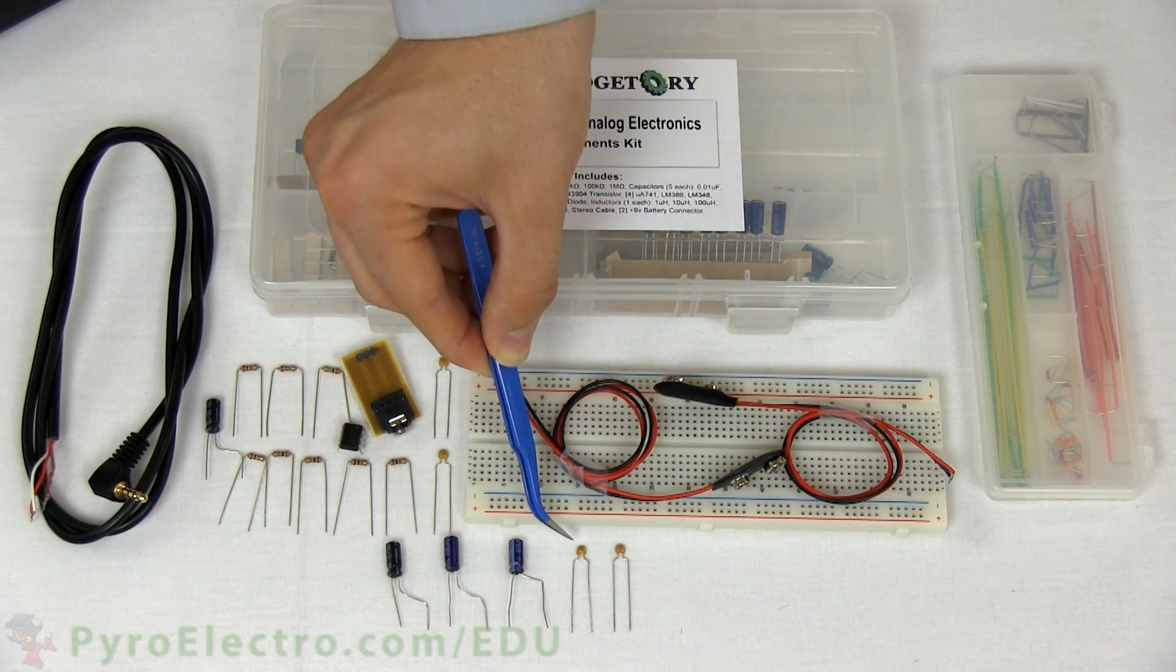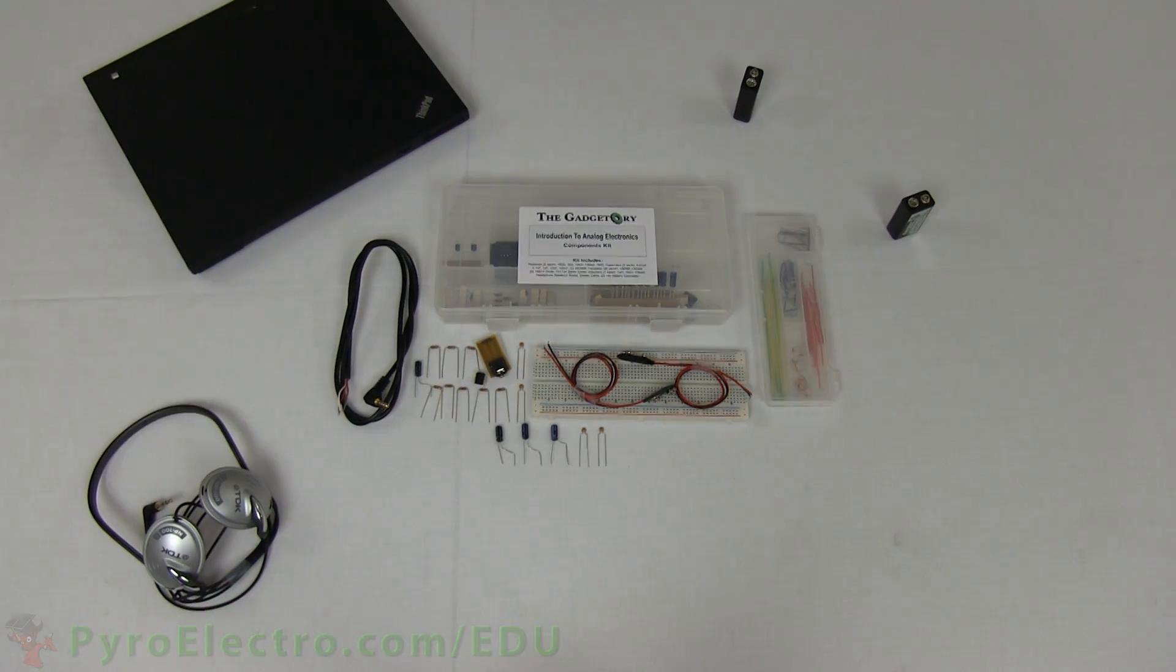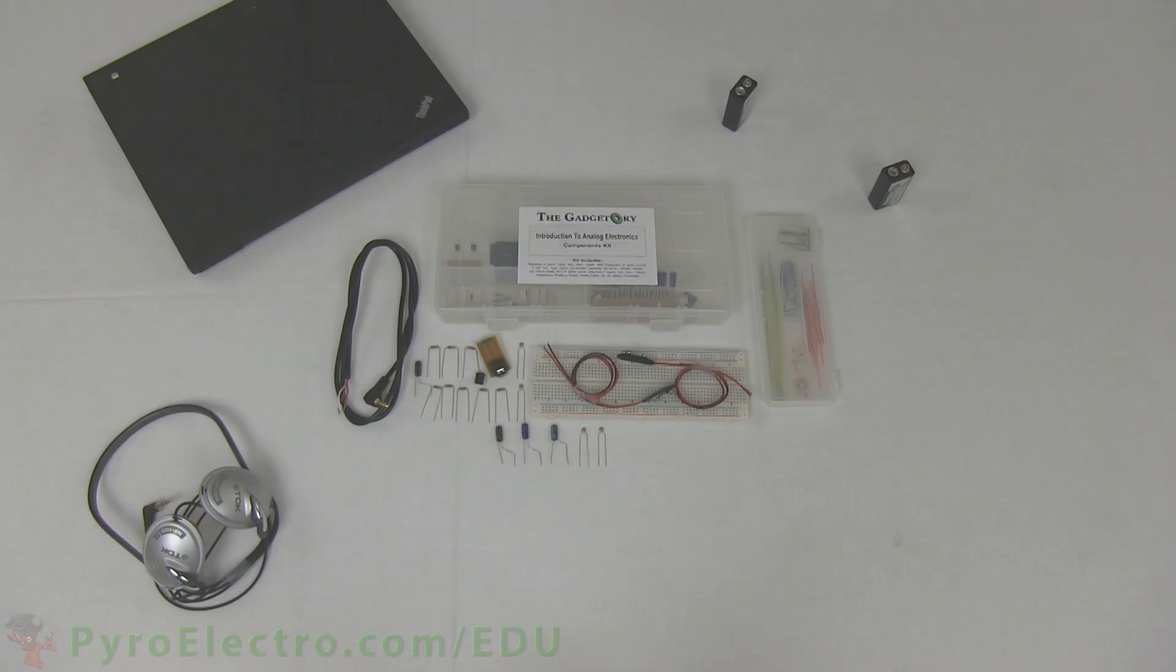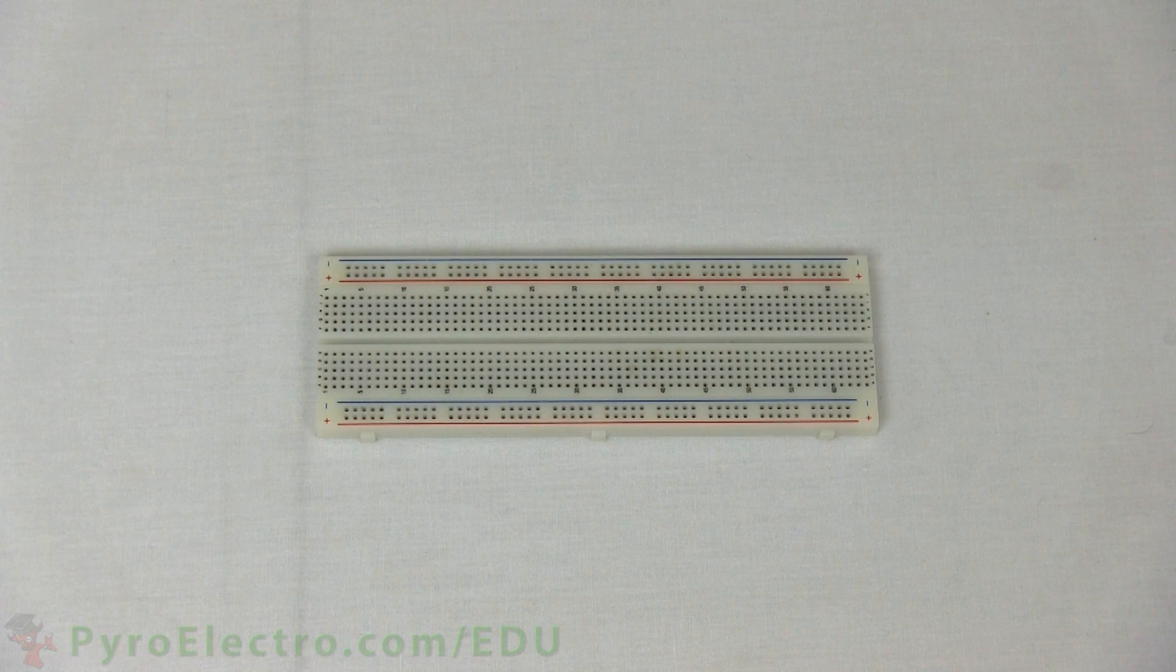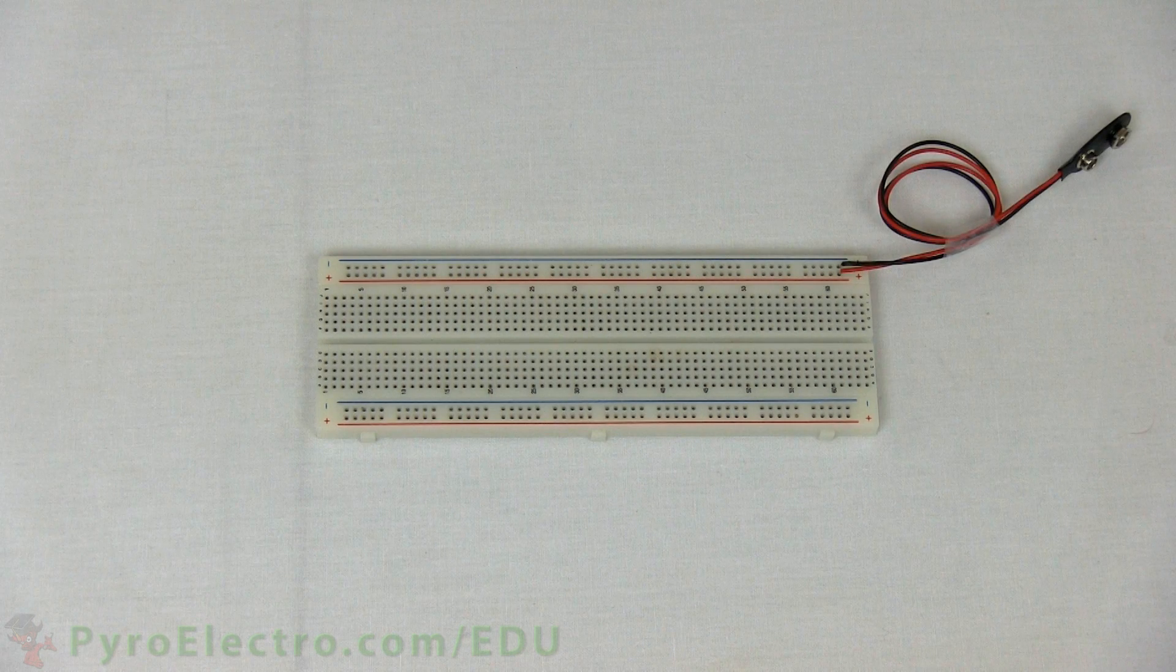In addition to these parts, we use a laptop, two 9-volt batteries, and a pair of headphones. Now, let's follow the schematic and build up the standard tone generating circuit that we've been using throughout this course.